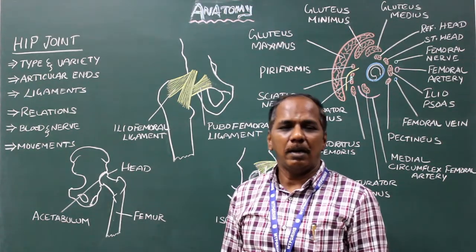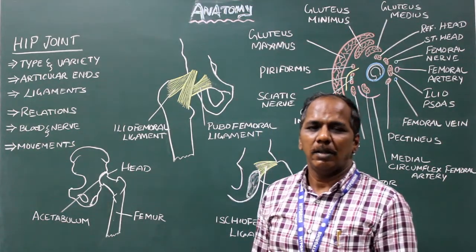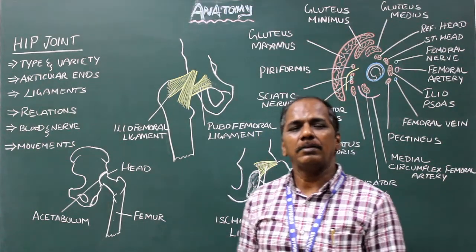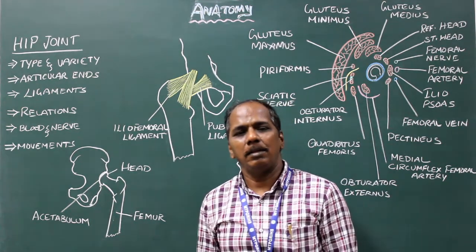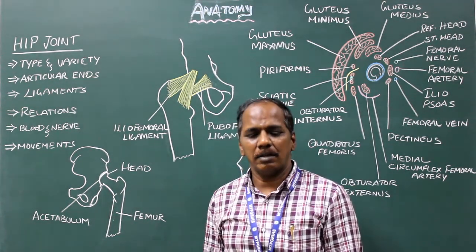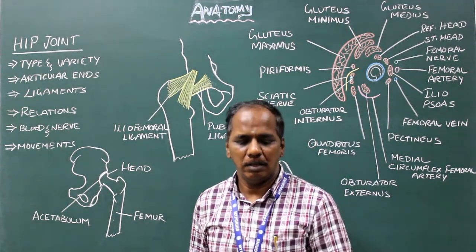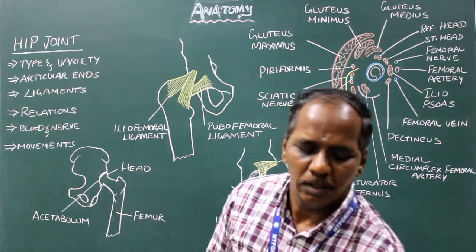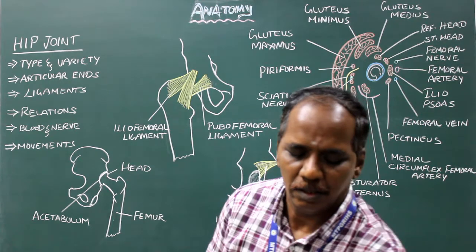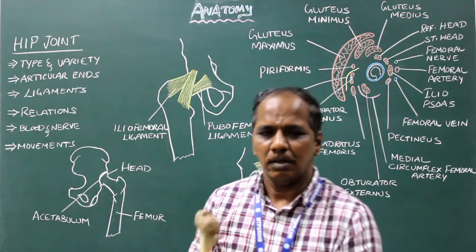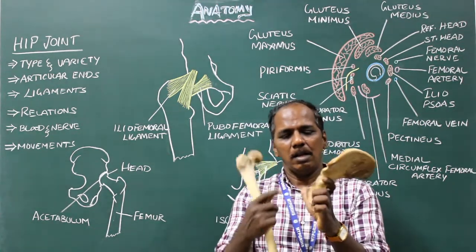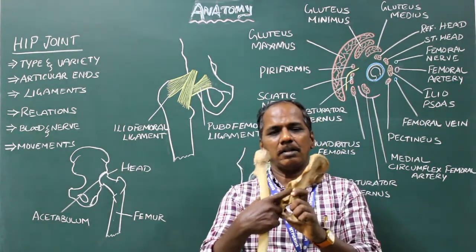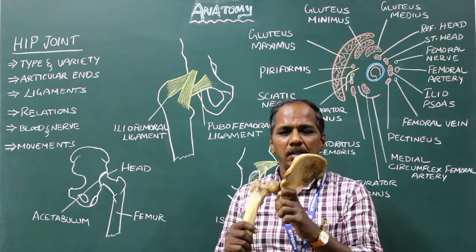Hip joint. Type: synovial variety, ball and socket variety.